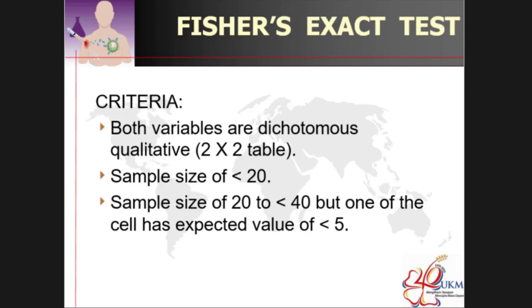The more difficult topic is Fisher's Exact Test. This is a very difficult topic to calculate. First and foremost for Fisher's Exact Test, there must be dichotomous qualitative variables. It is a 2x2 table. Sample size is smaller than 20, or less than 40 but the cell has a relative value of less than 5.